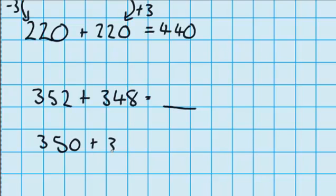350 plus 350. And this is how I got them. On this side, I took two away. I took two off this 352 so it became 350. And on this side, I added two. So 348 became 350.